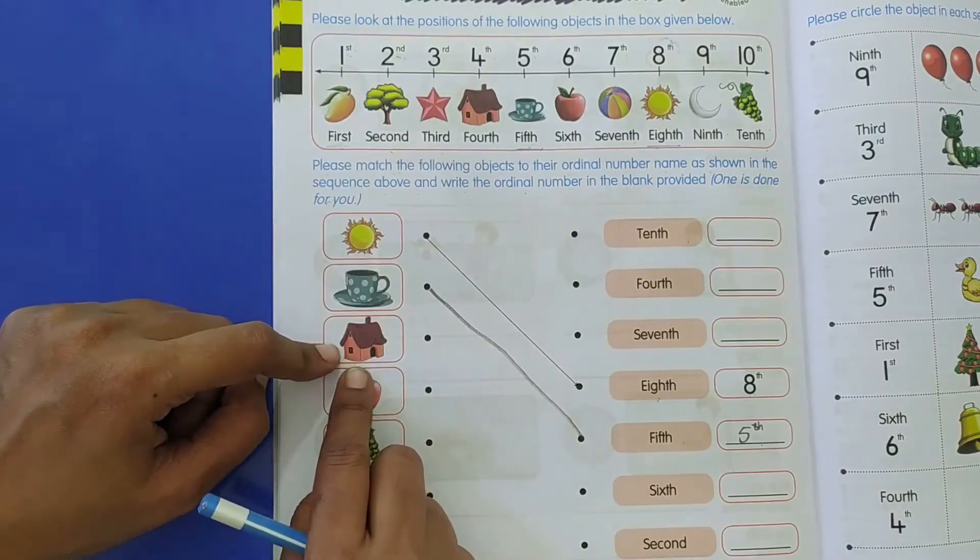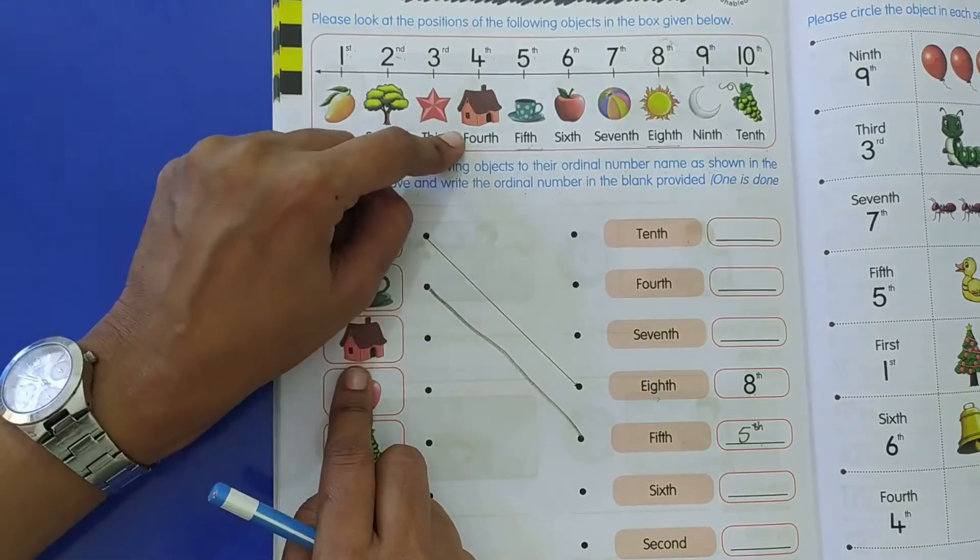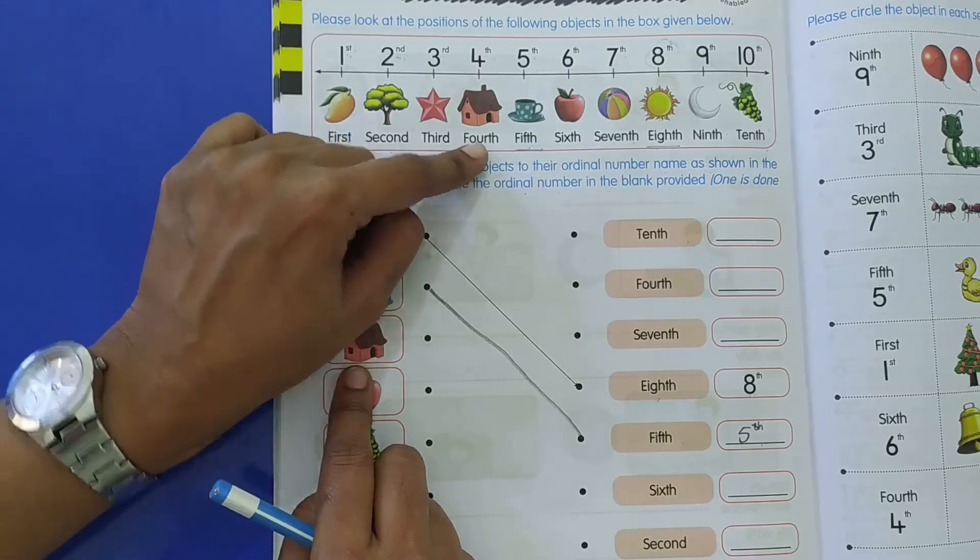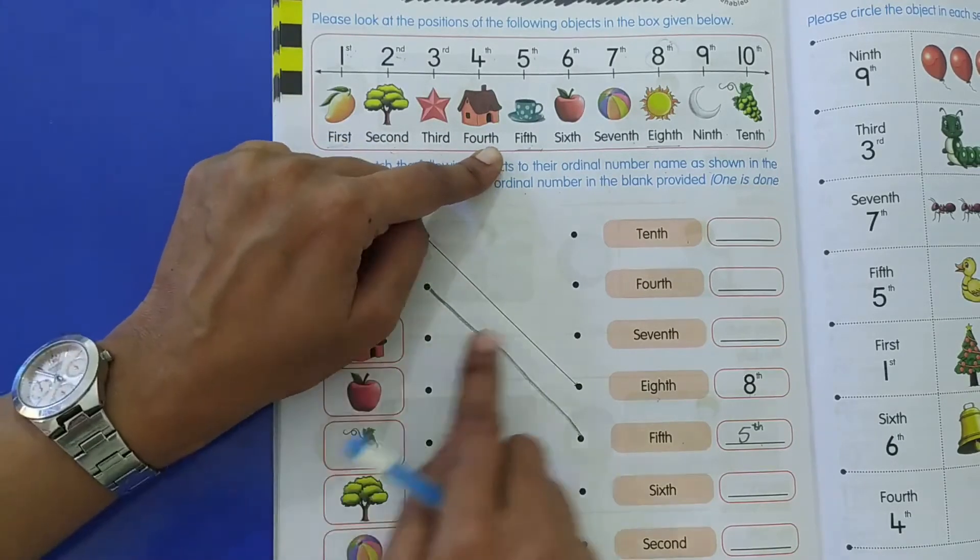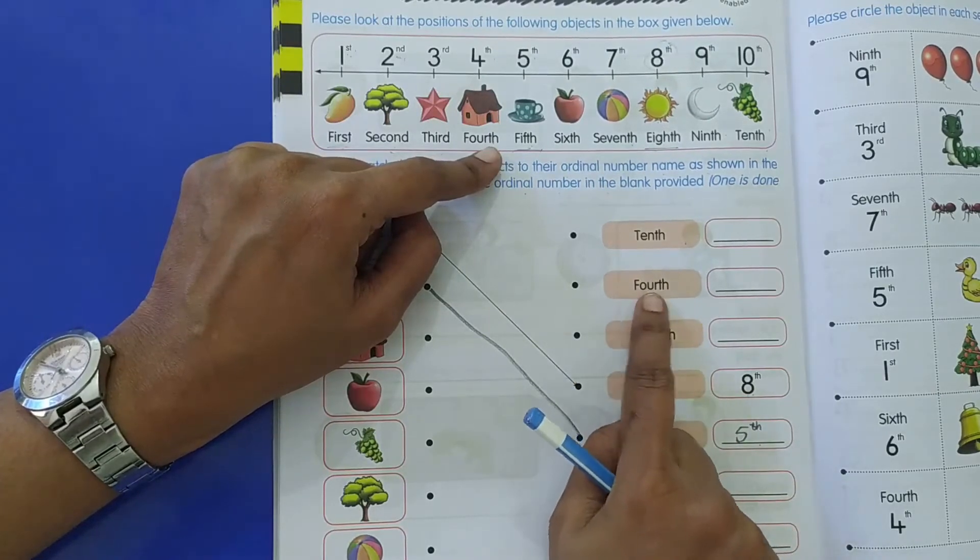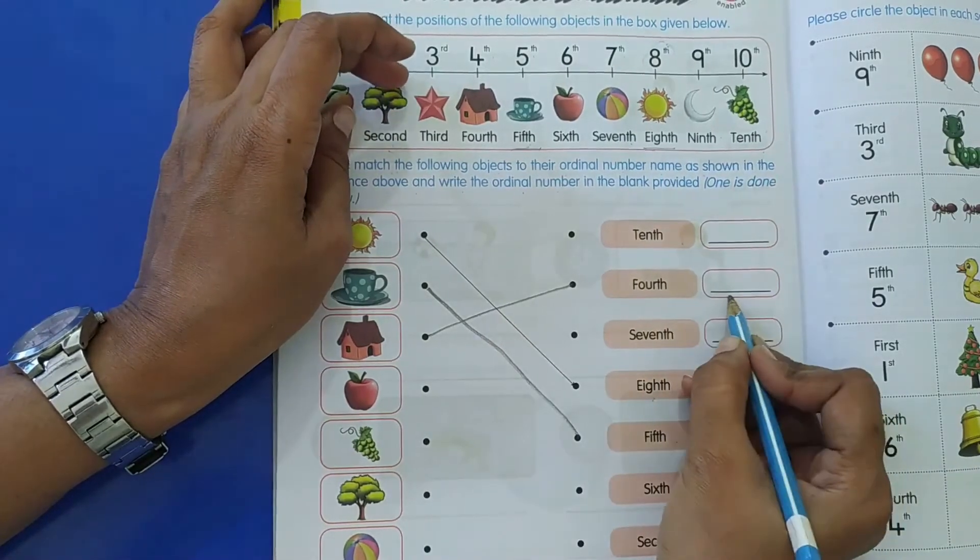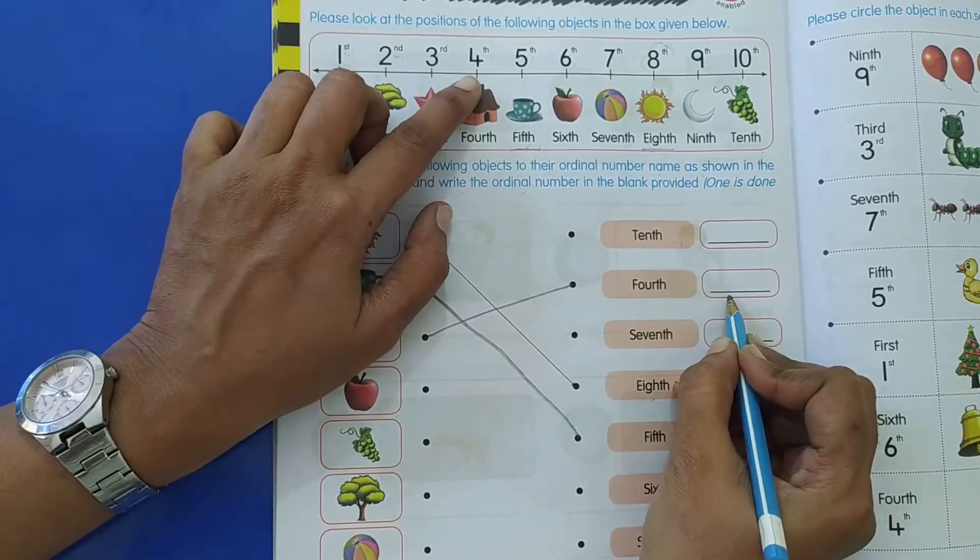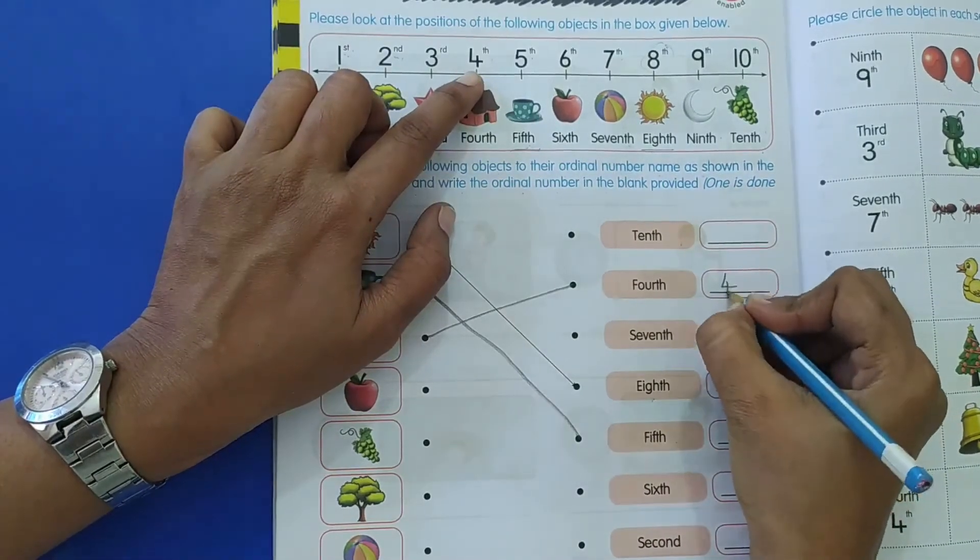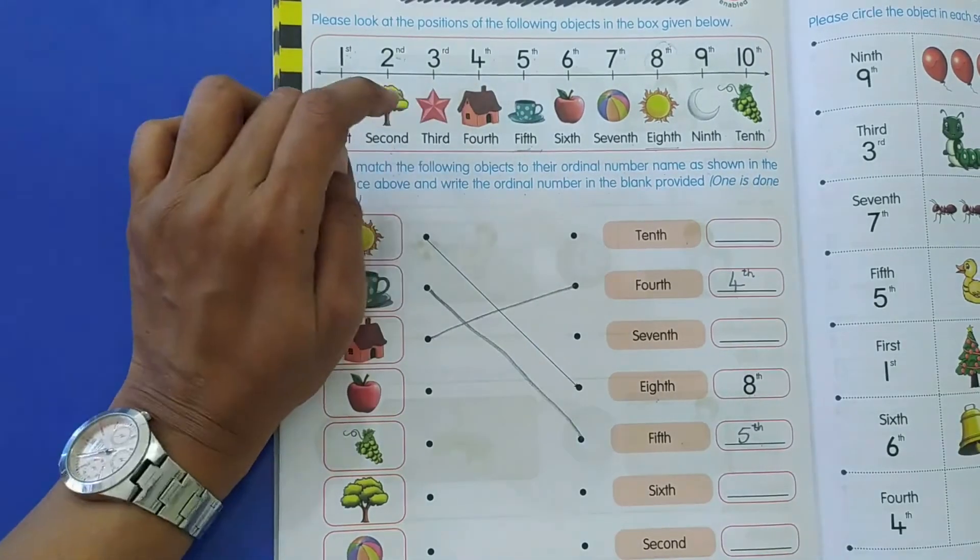Now, the house. The house is at what position? Where is the house? Here is the house. House position is four. F-O-U-R-T-H. Where do you see F-O-U-R-T-H? Here. F-O-U-R-T-H. So you will match it to this spelling. And how do you write fourth in numbers, in ordinal numbers? You will write four, and on top, a small little T-H.